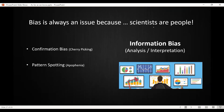On the information bias side, two big ones are confirmation bias — cherry-picking information that confirms our own beliefs, which we've all probably done — and pattern spotting. Our brains have evolved to spot patterns, and even when collecting information, we're almost predisposed to make connections that don't exist. One of the best examples is the gambler's fallacy, where serial gamblers convince themselves they can spot patterns in entirely random processes like lotteries or casino games.